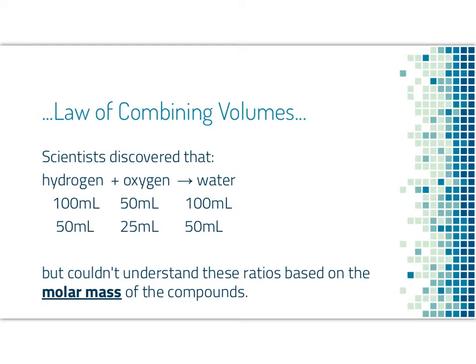Then they reacted 50 milliliters and needed exactly 25 milliliters to make exactly 50 milliliters. They couldn't understand these ratios based on the molar mass of the compounds. I went ahead and calculated the molar mass of hydrogen. Remember, hydrogen is H2,